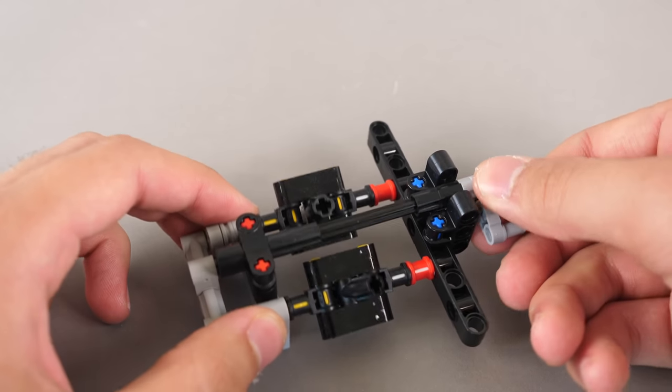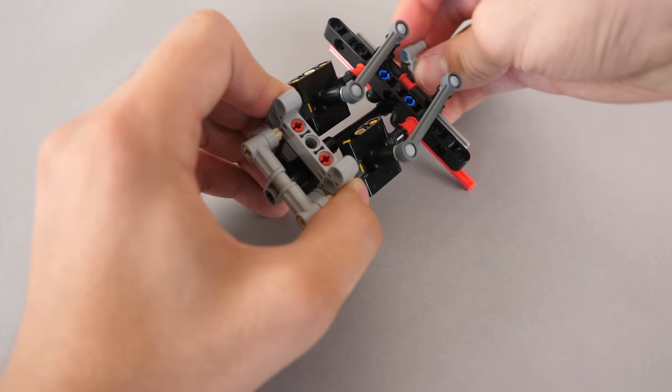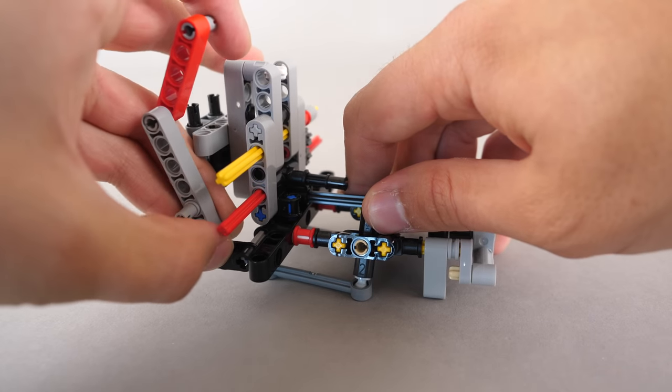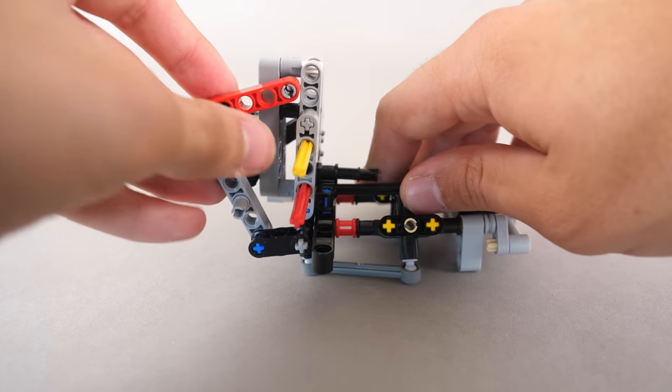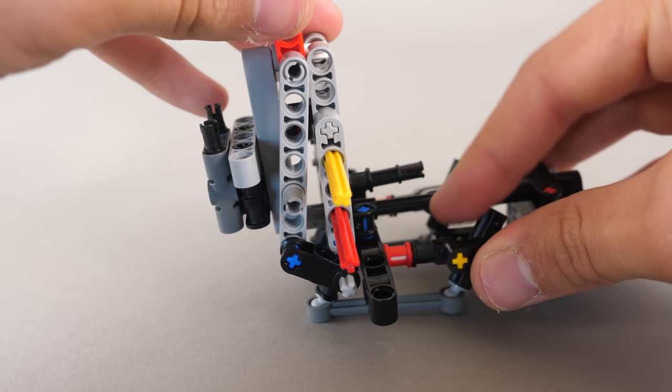The second stage begins with the front cabin. We start with this module that has a very interesting mechanism, which will have joysticks connected. Next, we add a few extra beams onto the cabin, and we can see that moving the joysticks forwards moves the beams up and down.